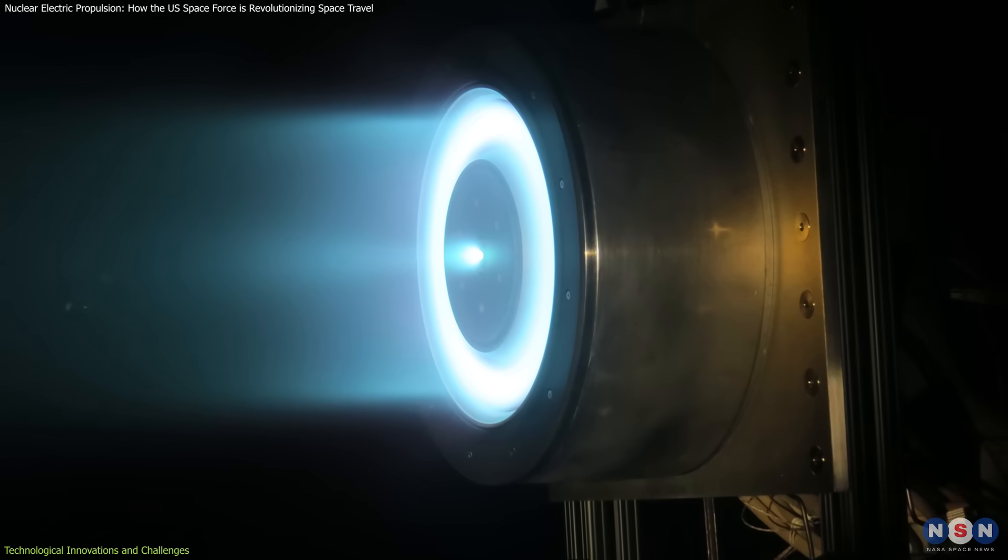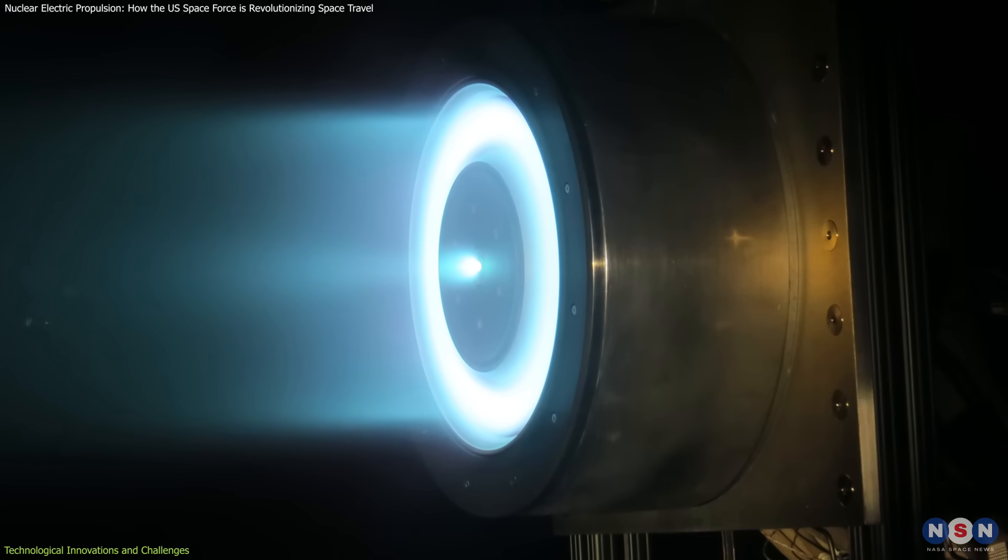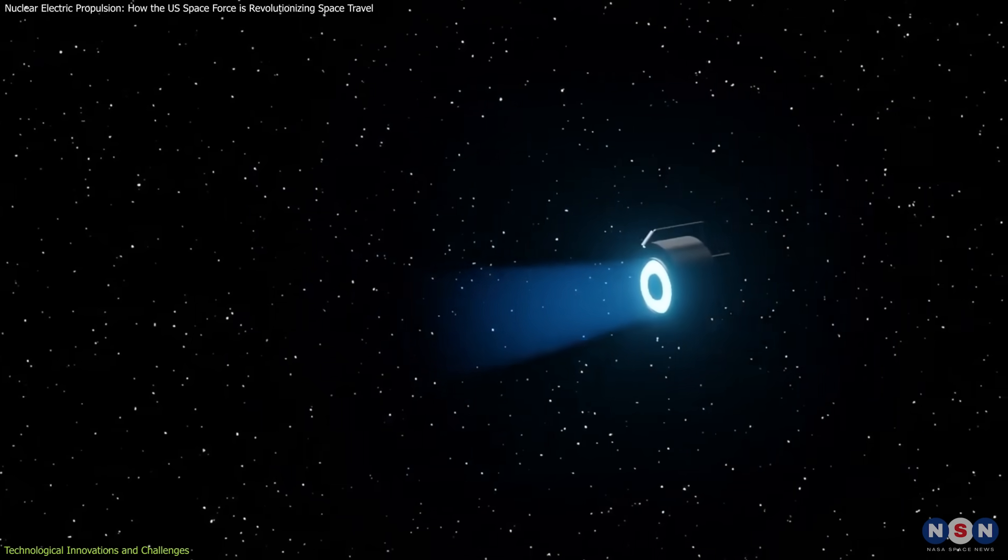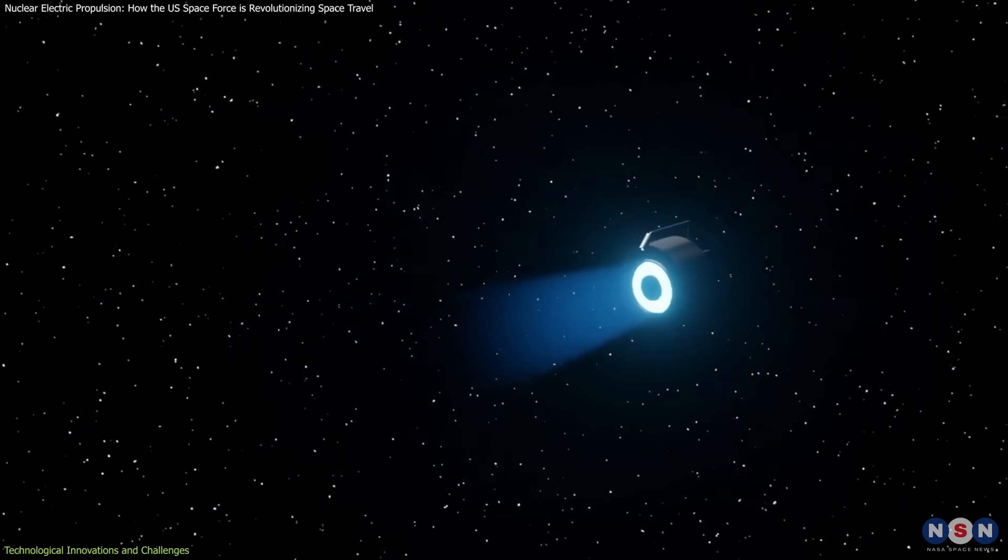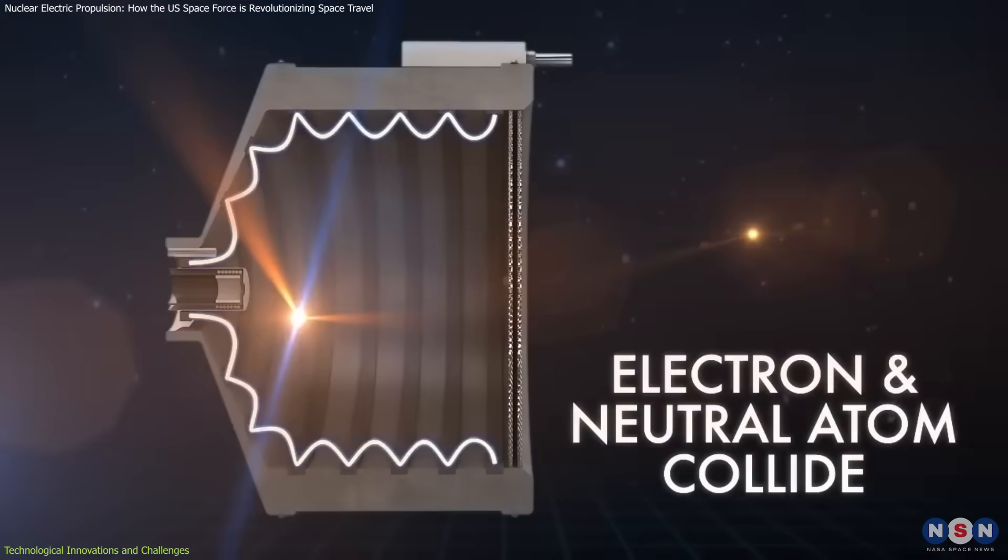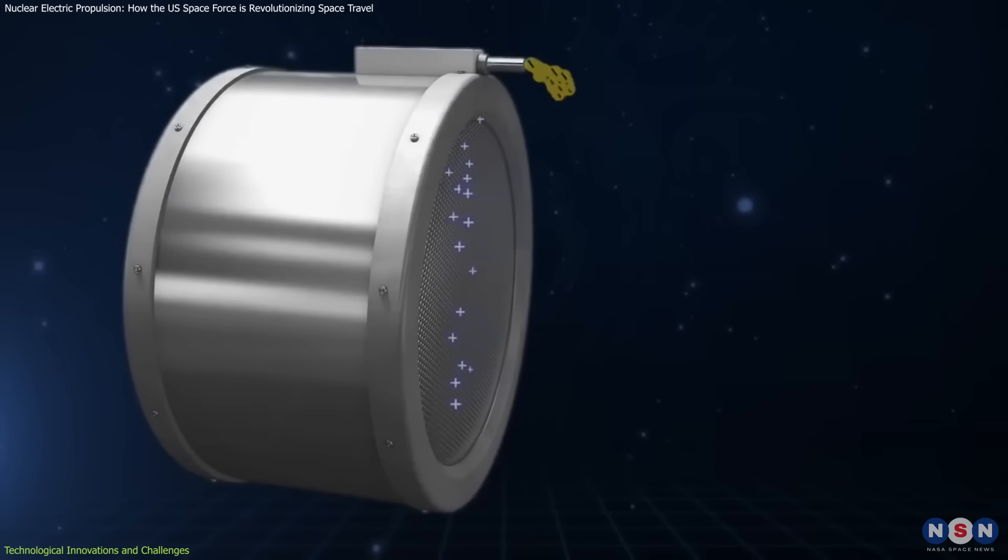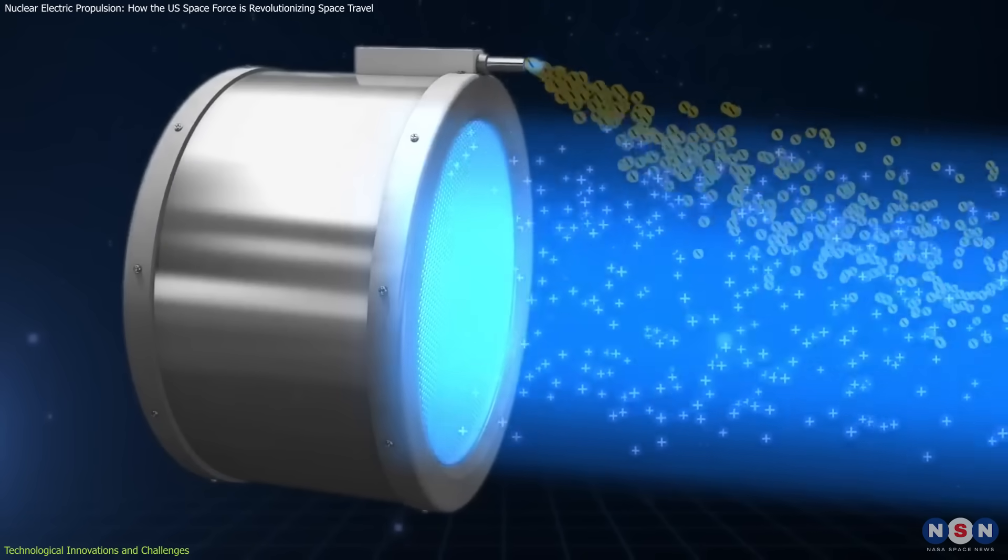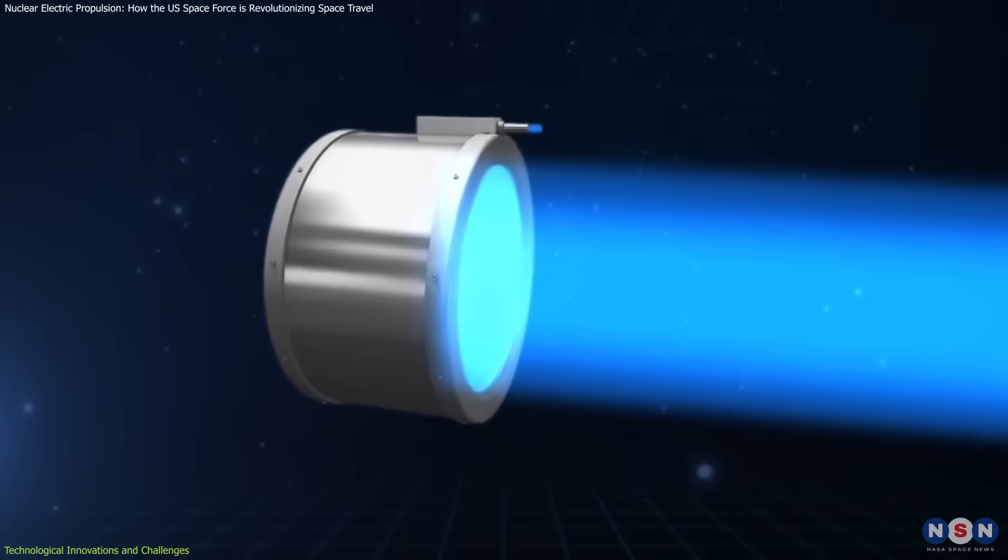The H-9 Hall Thruster, a centerpiece of this propulsion system, pushes the boundaries of power for electric engines. It accelerates ions using a magnetic field, creating a jet of charged particles that propels the spacecraft forward.